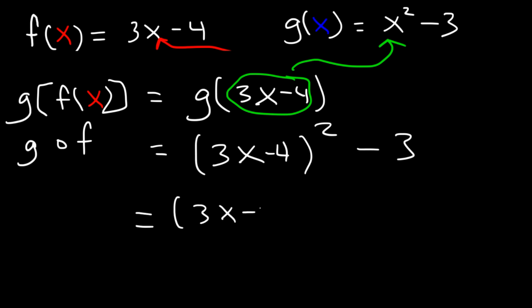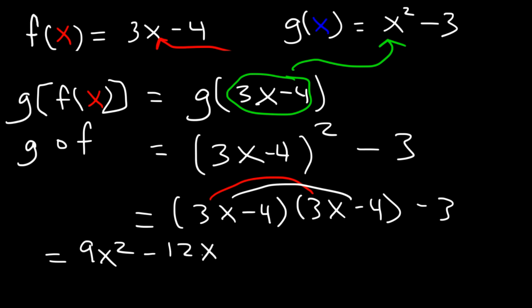3x minus 4 squared is 3x minus 4 times 3x minus 4. If we FOIL it, 3x times 3x is 9x squared. Then 3x times negative 4 is negative 12x. Negative 4 times 3x is also negative 12x. And negative 4 times negative 4 is 16.